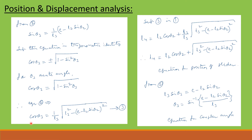Equation 2 gives cos theta 3 equal to (1/L3) times the square root of (L3 squared minus (E minus L2 sin theta 2) squared). Therefore, L4 finally becomes L4 equal to L2 cos theta 2 plus the square root of (L3 squared minus (E minus L2 sin theta 2) squared).